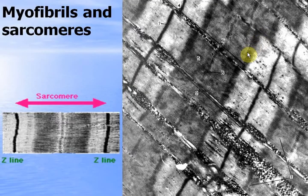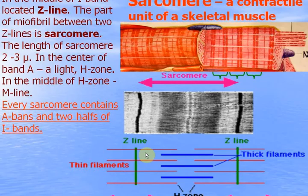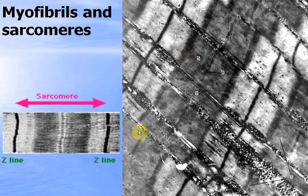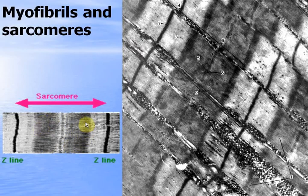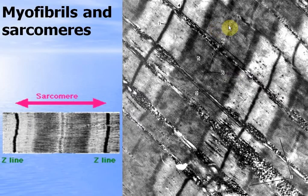There is a zone of overlapping. You can see the zone of overlapping in this sarcomere — it is much wider. So this sarcomere is in the constriction phase, and this sarcomere is in the relaxation phase. And you see the smooth endoplasmic reticulum, or sarcoplasmic reticulum, between myofibrils. This is a sarcomere under high magnification of the electron microscope. You see Z-lines and light bands — two halves of light bands — and this dark A-band, and the zone of overlapping where actin filaments go between myosin filaments, and the H-zone where only myosin filaments are located.